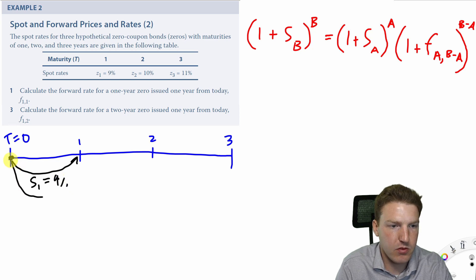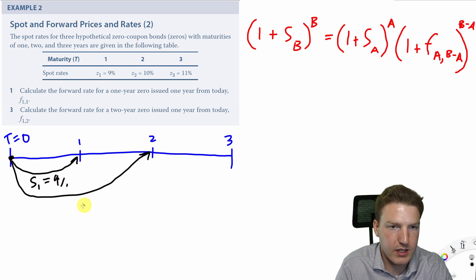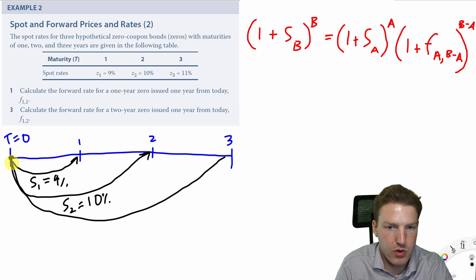But then if we wanted to lend money for 2 years, so compounded twice, that would be S2, which is 10%. But then if we actually wanted to lend money for 3 years starting today, we could actually lend at a rate of 11%.